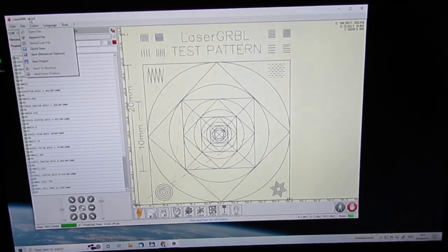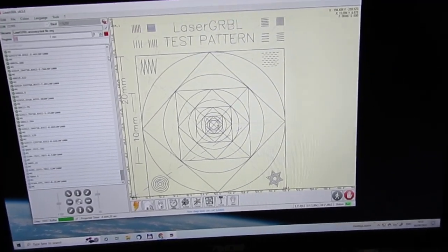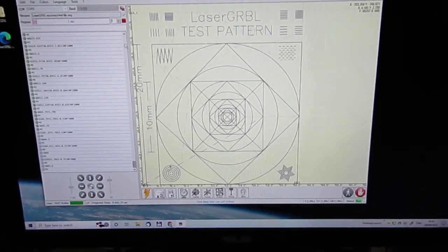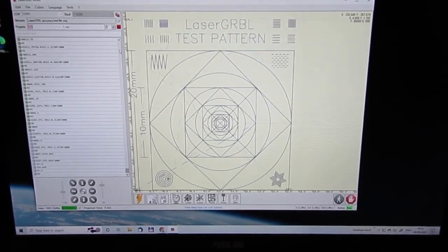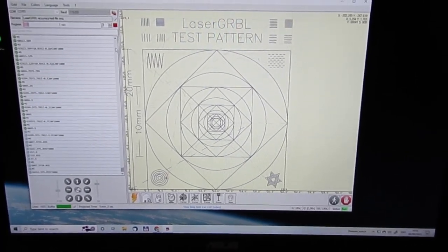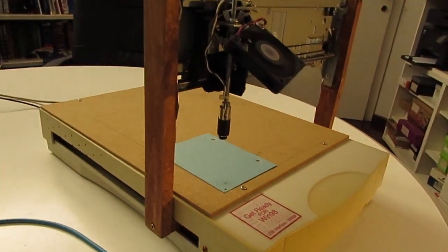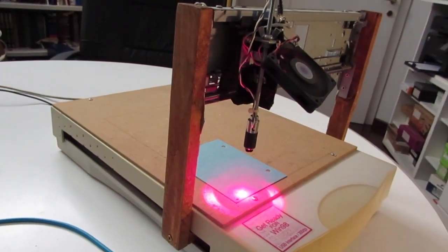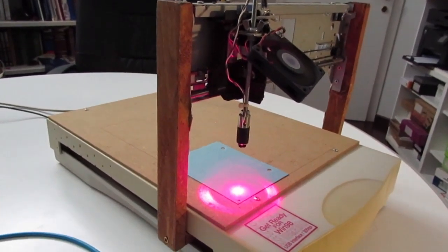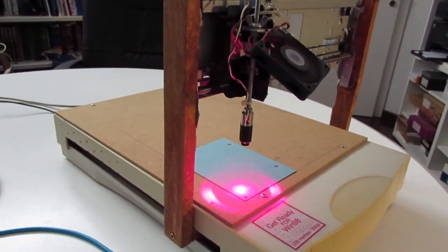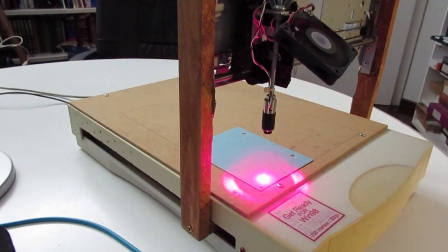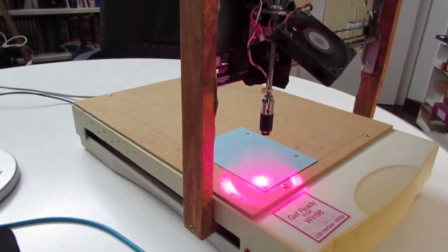For my laser engraver, I just have to disable the positive modulation of the laser via software because my laser driver doesn't have this feature. In order to upgrade the firmware, I also have to disable the positive modulation on the GRBL firmware code which I download from the GitHub repository.